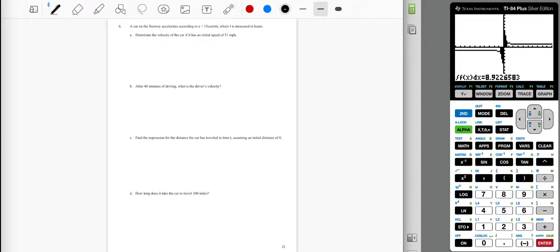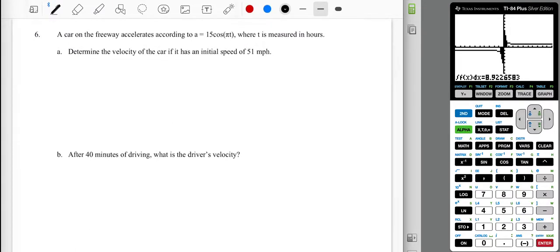So looking at page 21, a car on the freeway accelerates according to a equals 15 cosine pi times t, where t is measured in hours. Alright, so that's reasonable, I suppose.